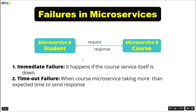The circuit breaker keeps track of how many calls succeeded and how many failed to a particular service. For example, if 3 calls out of 5 calls are failing or taking more time to get a response, then the circuit breaker opens so that the 6th call does not happen to the course microservice.